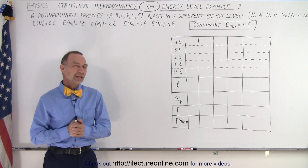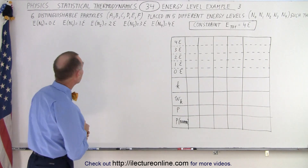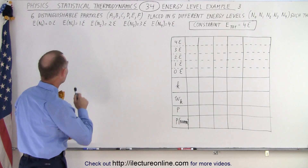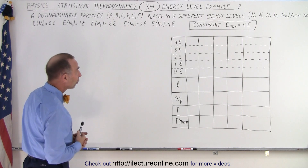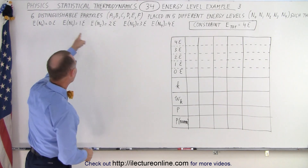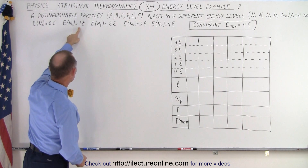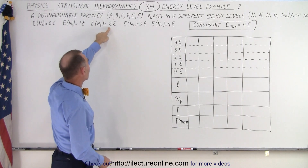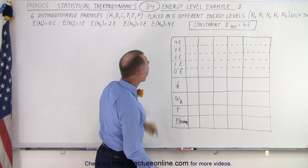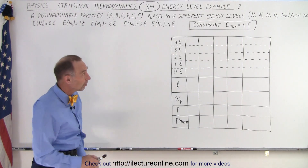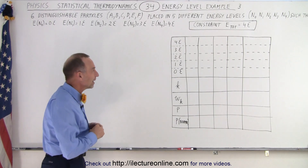Welcome to our lecture online. I'll expand this to something a little bit more challenging. We're going to have six distinguishable particles placed in five different energy levels, N0 through N4. The five energy levels are defined as: zero quantum energies, one quantum energy, two quantum energies, three quantum energies, and four quantum energies. The constraint is that the total energy of all particles combined must equal four quantum energies.